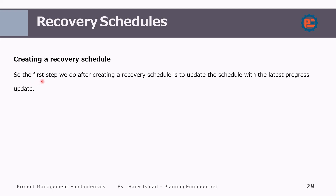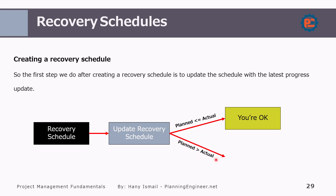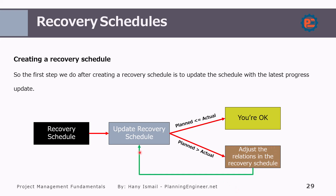The first step after creating a recovery schedule is to update the schedule with the latest progress update. This is a very important step to do before submitting your schedule for approval. If after the update the plan percentage is less than or equal to the actual, then you are okay. If the plan is more than the actual, that is not a good scenario — you need to adjust the relationships in the recovery schedule and check again.